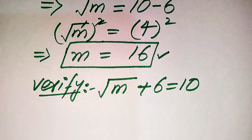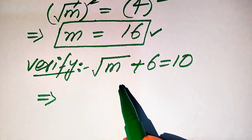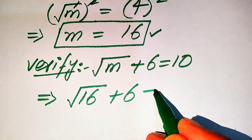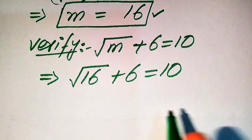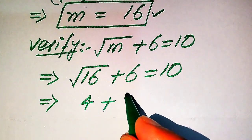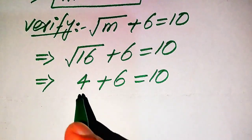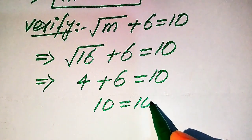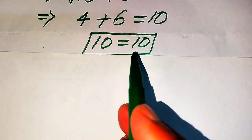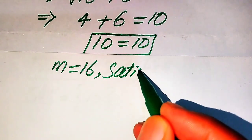Now we check whether 16 satisfies our given equation or not. We substitute the value 16 into the left hand side, and it will be written as square root of 16 plus 6 equals 10. The square root of 16 is 4, and 4 plus 6 equals 10. When we add these two values, 6 plus 4 becomes 10, which equals 10. Both sides are equal, which means the value m equals 16 satisfies our given equation.